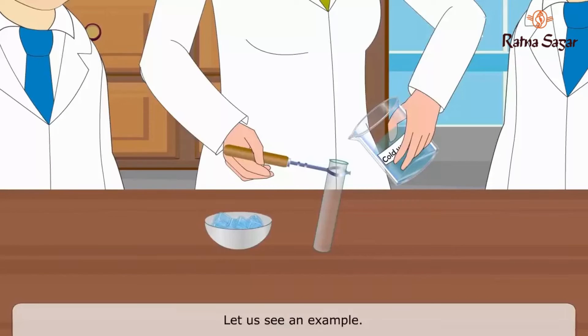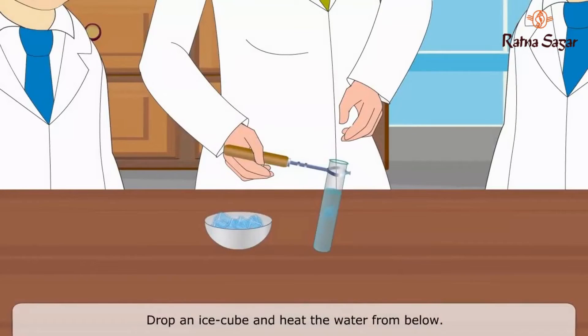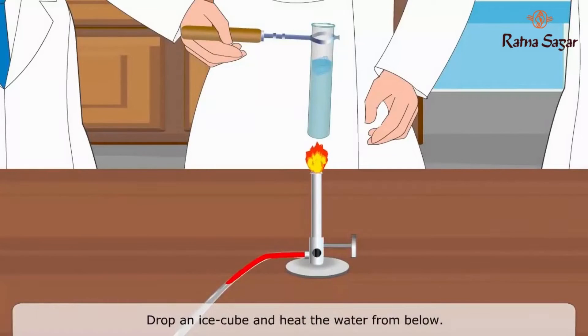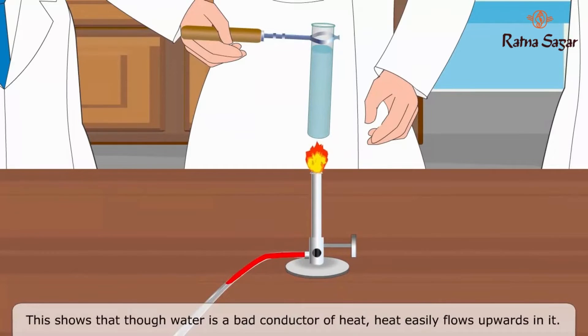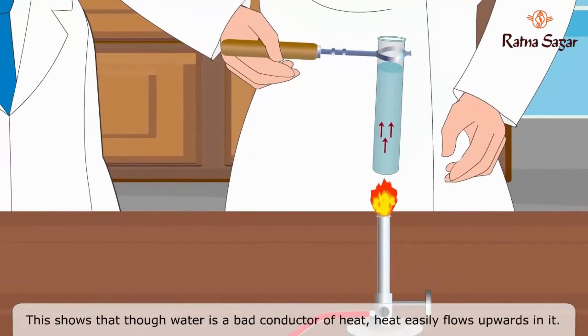Convection. Let us see an example. Fill the test tube with cold water. Drop an ice cube and heat the water from below. Ice melts quickly. This shows that though water is a bad conductor of heat, heat easily flows upwards in it.